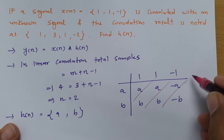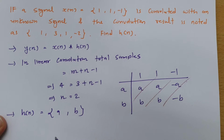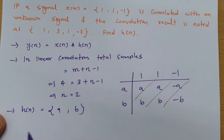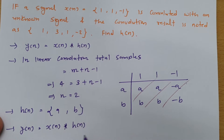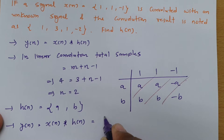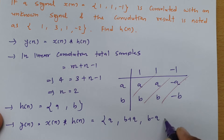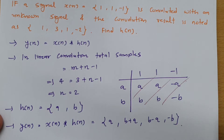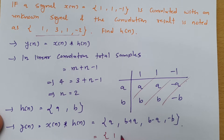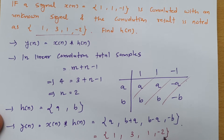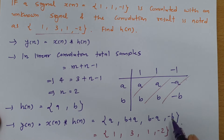Adding diagonally, y of n equals the convolution of x of n and h of n, giving: first value a, second value b+a, third value b-a, and fourth value -b. Comparing with the known data {1, 3, 1, -2}, we can say a equals 1 and b equals 2.